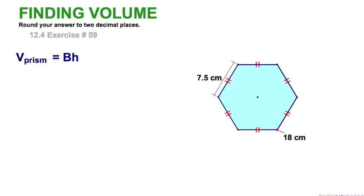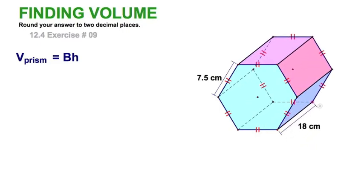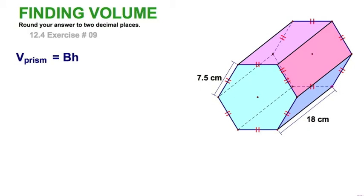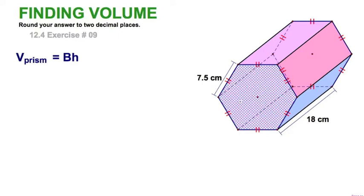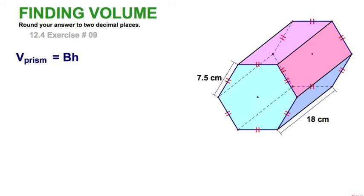I'm looking at a regular hexagon here, and when I project its depth I have a hexagonal prism. This is exercise number nine in your text. We're going to find the volume of this figure. We know the volume is base times height, where capital B means the area of the base. One-half times apothem times perimeter will give us the area of this regular hexagon.